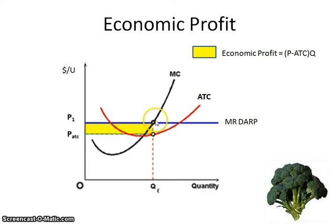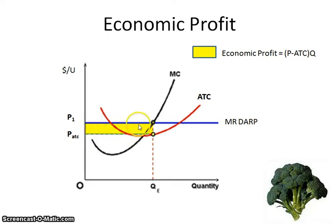When we're looking at total economic profit, you take price minus ATC and multiply it times the quantity. This whole rectangular area here is your total economic profit.